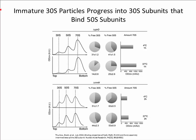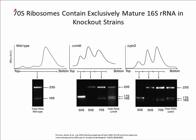We next performed the in vitro maturation assay to determine if accumulated immature particles in the assembly factor knockout strains were competent for maturation. The top panel shows results for the YJQ knockout strain and the bottom panel for the RIMM knockout strain. In both cases, incubation at 37°C versus 4°C showed a marked decrease in free 30S subunits, free 50S subunits, and a corresponding increase in 70S ribosomes. These results indicated that the immature 30S particles that accumulate in either the delta YJQ or delta RIMM strain are capable of associating with 50S subunits to form 70S ribosomes.